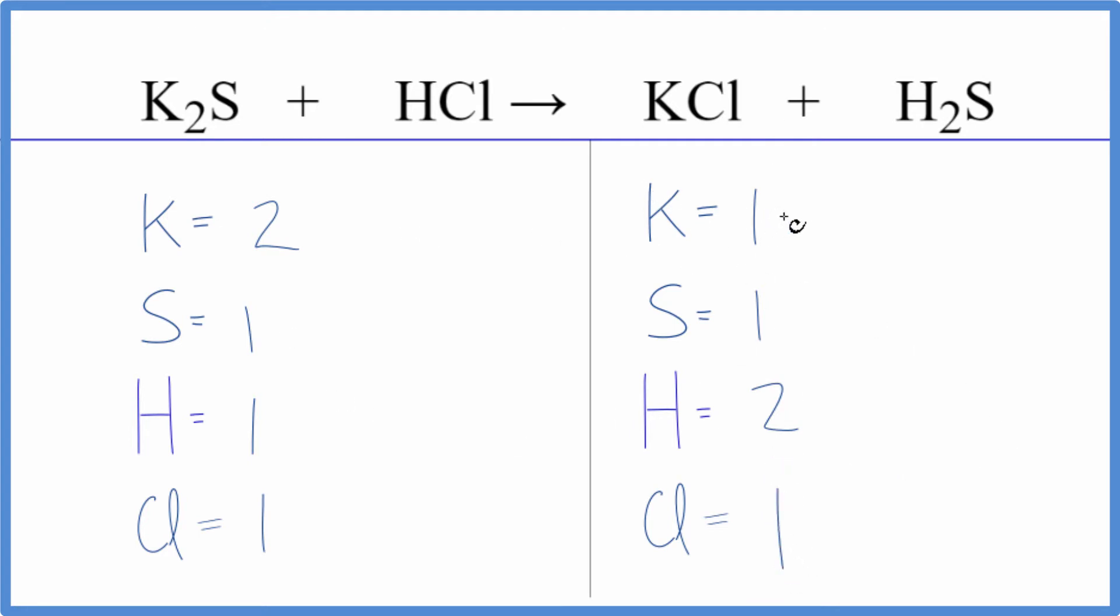As we look at this, why don't we just balance the potassium by putting a coefficient of two in front of the KCl. One times two gives us two of those. This two goes to everything though, so one times two, that gives us two chlorine atoms.